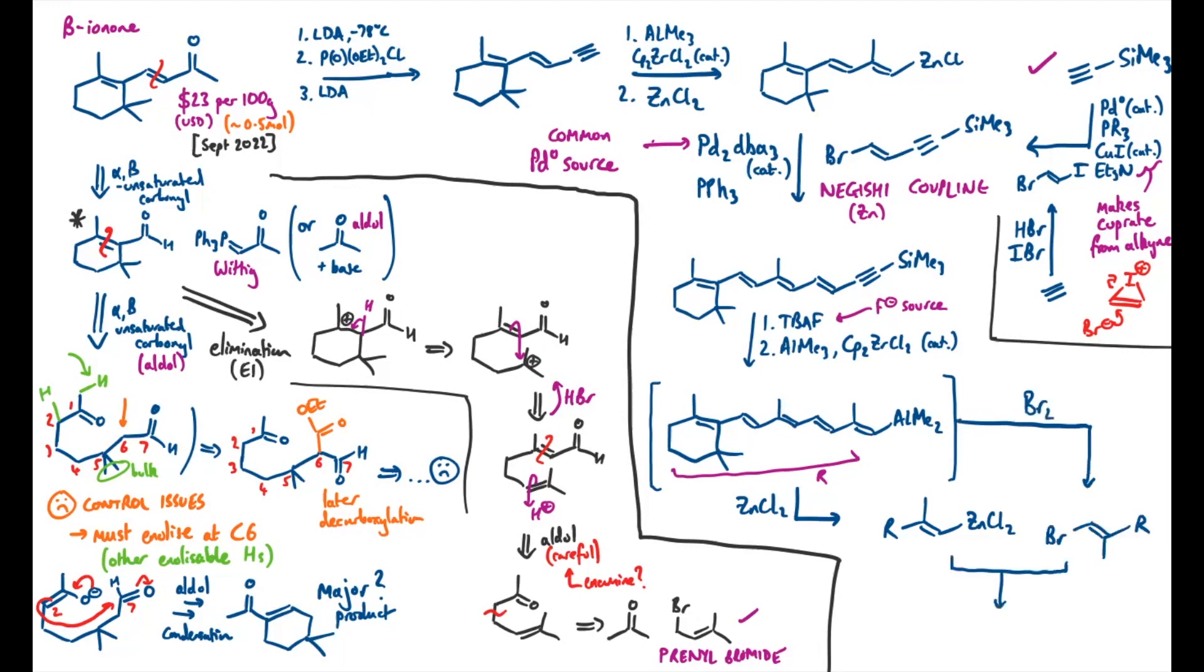And then finally, we can do another Negishi coupling, using the palladium source again, and the phosphine. And that will get us to our product. So I made this video using some more modern chemistry than maybe in some of my other retrosynthesis videos. There are certainly lots of other ways of making this molecule, like for example, I could have used lots of Wittig reactions, but this catalytic method will generate a lot less waste, and should be pretty easy to actually do in the lab.